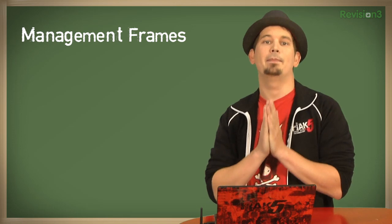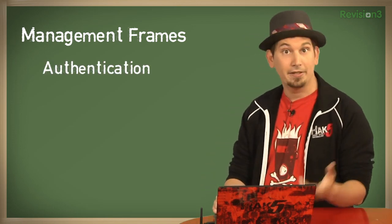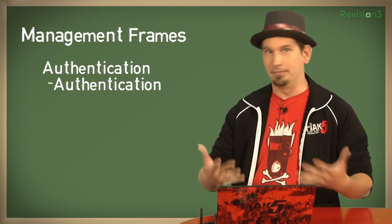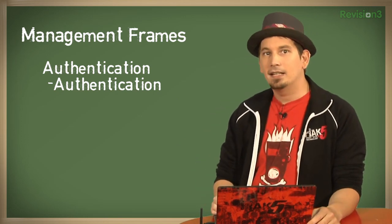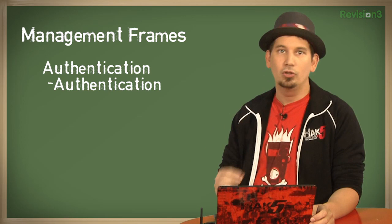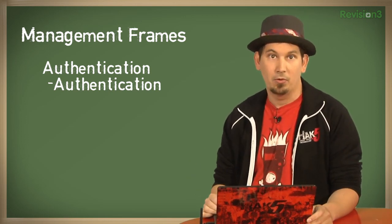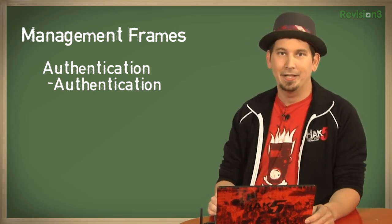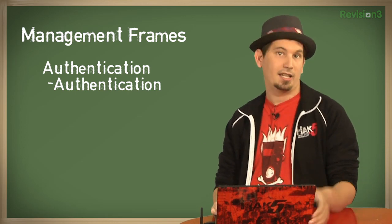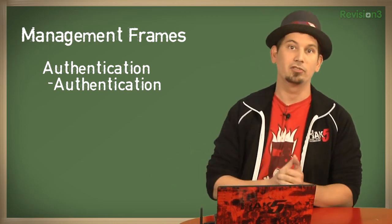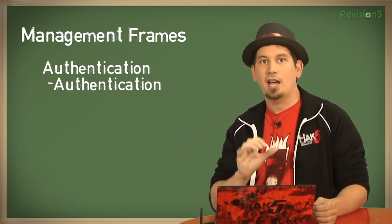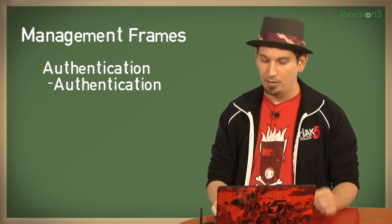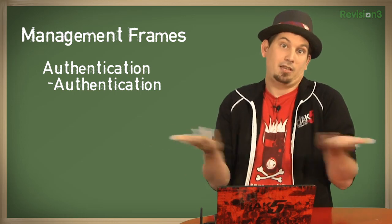The final kind of management frame is authentication, which comes in two flavors: authentication and de-authentication. The authentication frame begins the process of authentication. In the case of an open access point, there are really only two authentication frames exchanged — one asking for access and the other saying come on in. In the case of the pathetically weak WEP authentication standard, the client sends an auth frame asking for access, and the station responds with another auth frame containing a bit of text — known as a challenge. The client then takes that bit of text, encrypts it with the WEP key, and sends it back. If everything matches, they're all best friends.